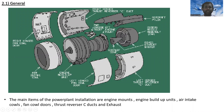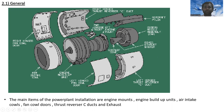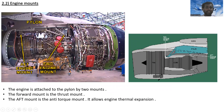Moving to power plant installation — the main items of the power plant installation are: engine mounts, engine build-up units, air intake cowl, fan cowl doors, thrust reversers, C-ducts, and exhaust. You can identify the right-hinge fan cowl door, left-hinge fan cowl door, engine build-up unit, air intake, mixed exhaust system, exhaust cone, aft engine mount, forward engine mount, the CNA (command nozzle assembly), the aircraft pylon, and left and right hand thrust reverser C-ducts.